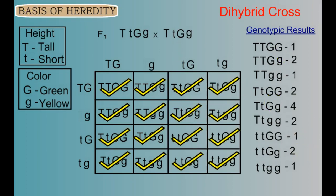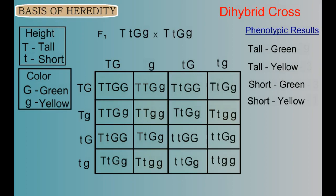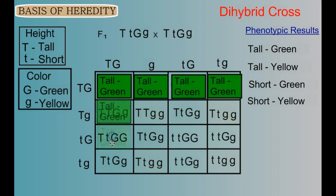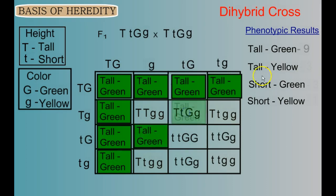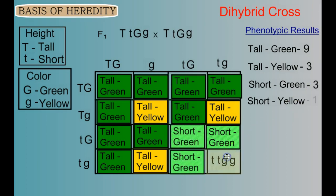For the phenotypic results, the four possible phenotypes are tall and green, tall and yellow, short and green, and short and yellow. Marking them as we go: nine boxes are tall and green, three are tall and yellow, three are short and green, and one is short and yellow. We see that for a dihybrid cross we get a phenotypic ratio of 9:3:3:1.